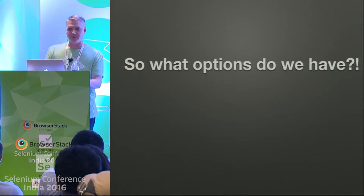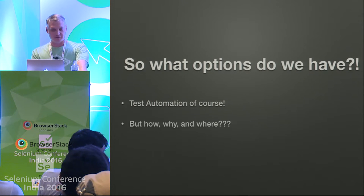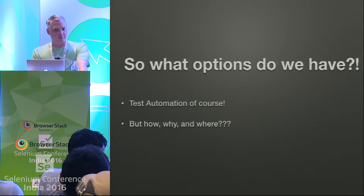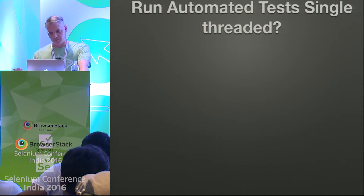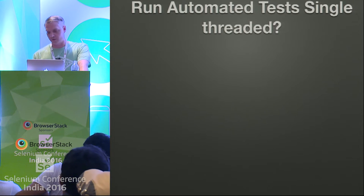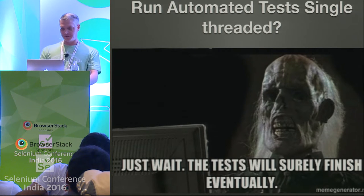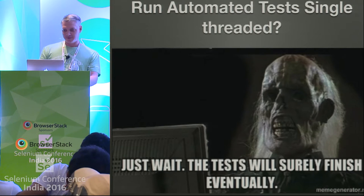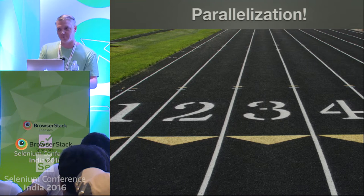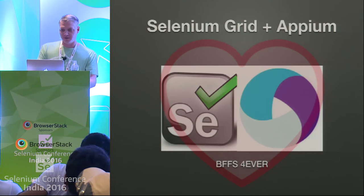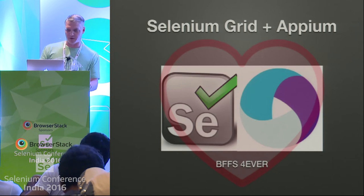So what options do we have? Automation, of course — that's why we're all here. But how, why, and where? You can run automated tests, but if you run them single-threaded you might end up like this guy waiting for the tests to finish. Parallelization, of course. And we have happy BFFs forever: Selenium Grid and Appium, that make it work.